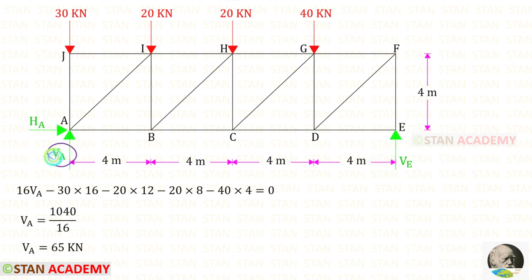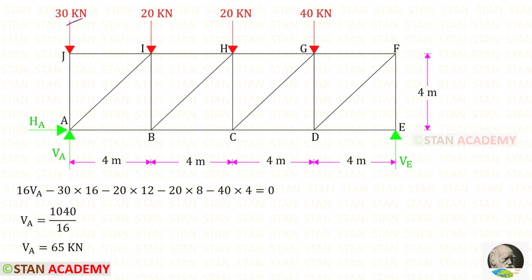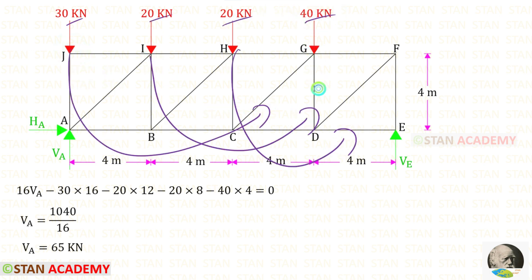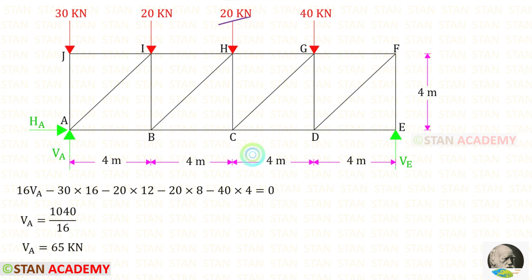Let us find VA. To find that, I am going to take moment about E. VA is acting in the clockwise direction, so it will be positive, and the distance is 16. All four loads are acting in the anticlockwise direction, so all of them will be negative. For this load the distance is 16, for this load it is 12, for this load it is 8, and for this load it is 4. For VA, we will get 65 kN.